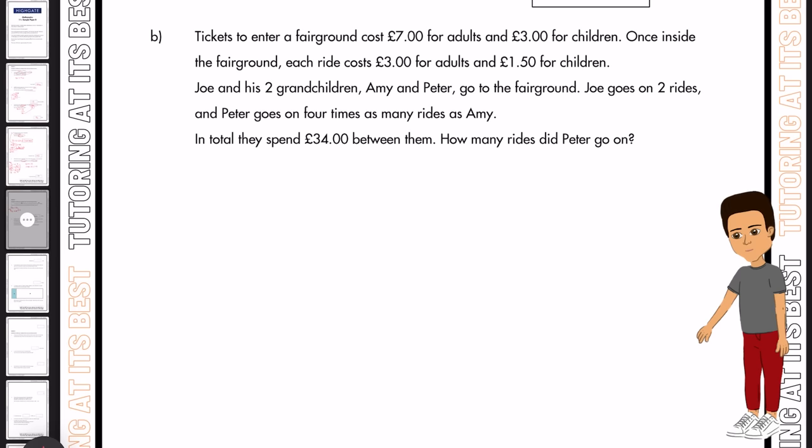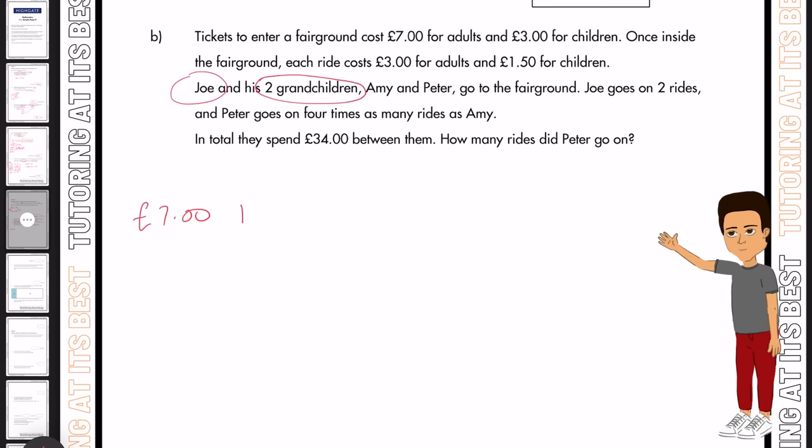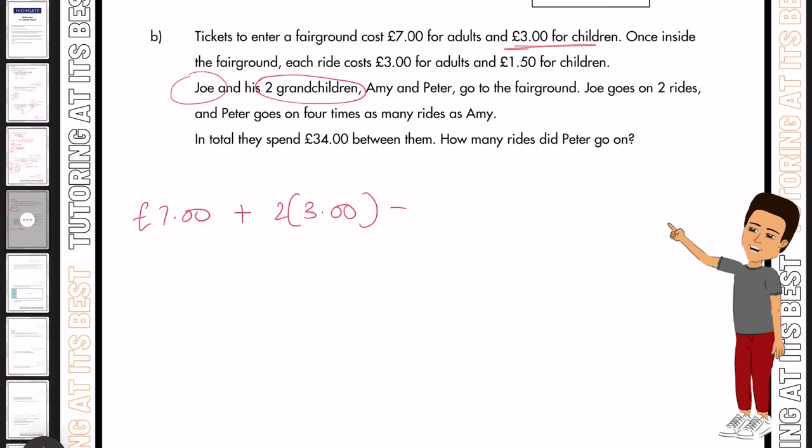Tickets to enter a fairground cost £7 for adults and £3 for children. Once inside the fairground, each ride costs £3 for adults and £1.50 for children. So Joe and his two grandchildren go to the fairground. So we've got Joe and his two grandchildren. So instantly, we have £7 for Joe plus two grandchildren. It's £3 each. So that's two multiplied by £3, and that gives us £13 for entry.